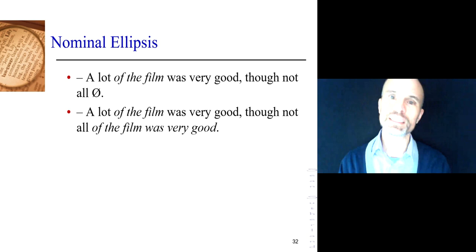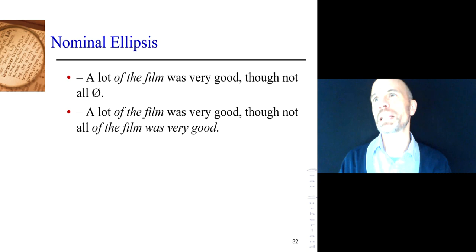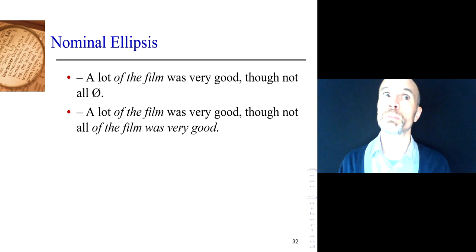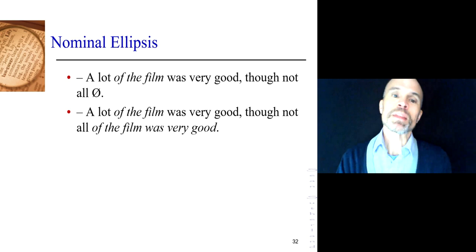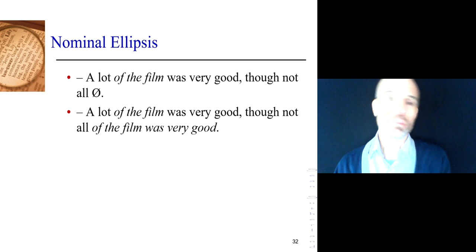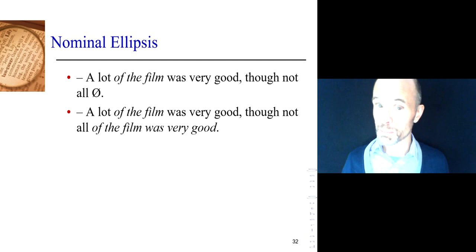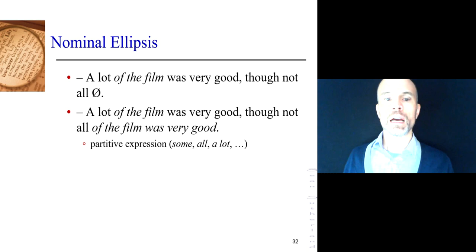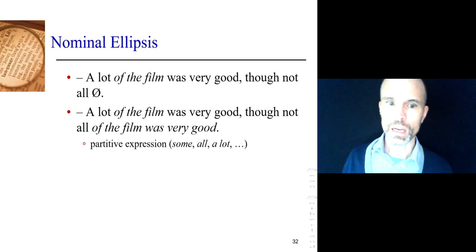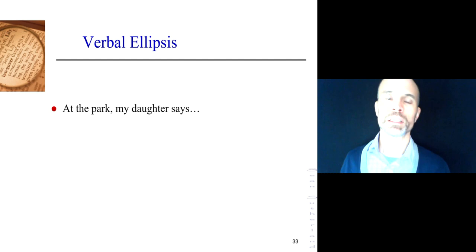In written form, we're less likely to use ellipsis, because we want to be precise and make sure everything is understood — your reader can't ask 'sorry, what did you mean?' Whereas in spoken language, we're more apt to use ellipsis because the person can always ask. So we're often more implicit when we speak — we leave things out and assume the person will understand. These are all examples of nominal and verbal ellipsis.